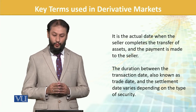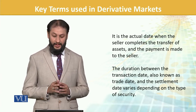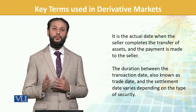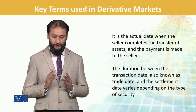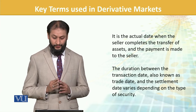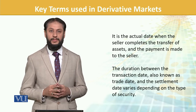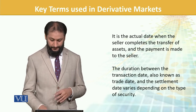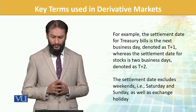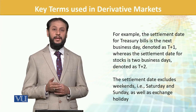Settlement date is the actual date when the seller completes the transfer of assets and the payment is made. The duration between the transaction date, also known as the trade date, and the settlement date varies depending on the type of security. For example, the settlement date for T-bills is the next day.